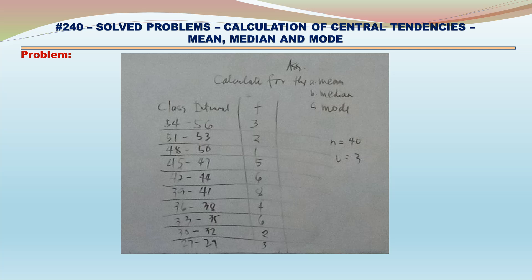Problem: Calculate Mean, Median and Mode from the data. Class Intervals and Frequencies: 54–56: frequency 3; 51–53: frequency 2; 48–50: frequency 1; 45–47: frequency 5; 42–44: frequency 6; 39–41: frequency 8; 36–38: frequency 4; 33–35: frequency 6; 32–32: frequency 2; 27–29: frequency 3. Total number: 40. Class interval size equals 3.